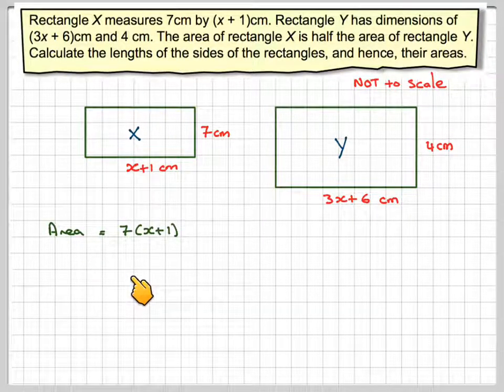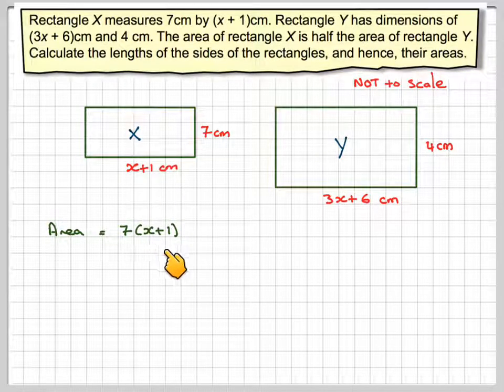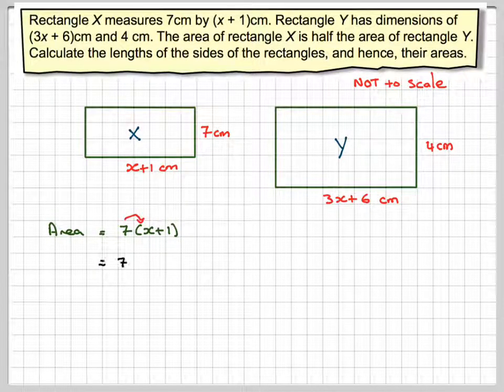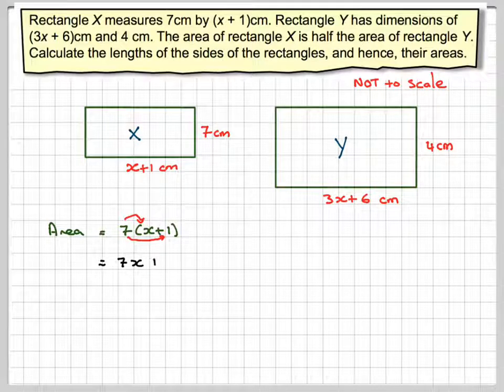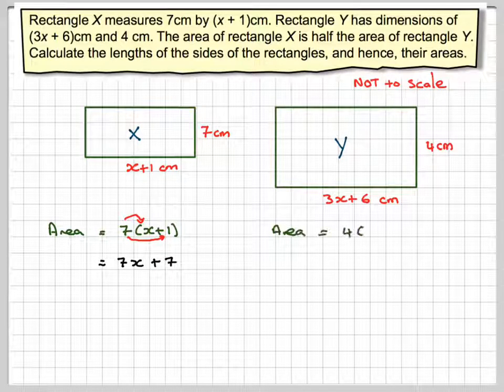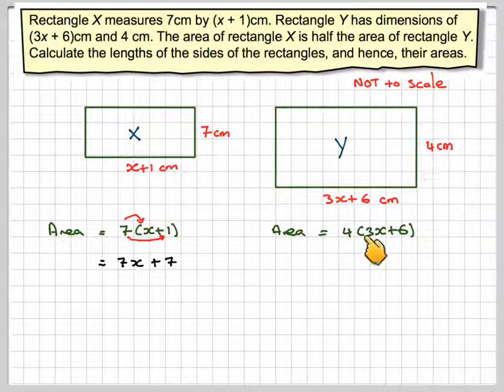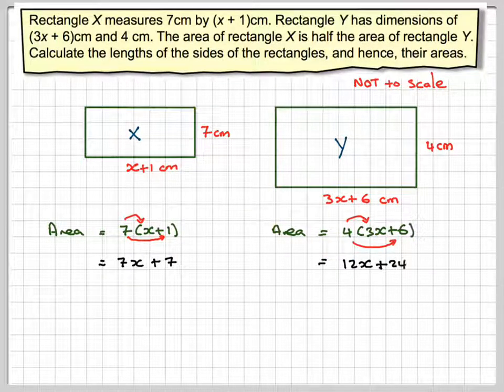Now the area of this one is 7 times (x + 1). And if we expand that you get 7x + 7. And the area of this one is 4 times (3x + 6). And if you expand that you get 12x + 24.